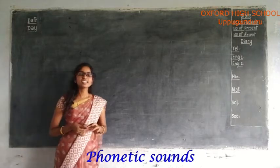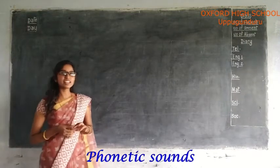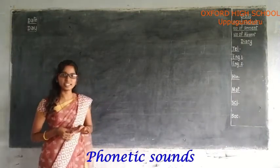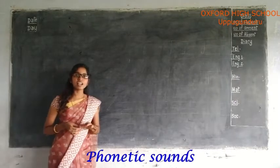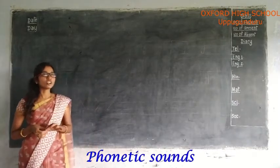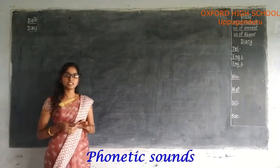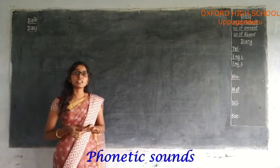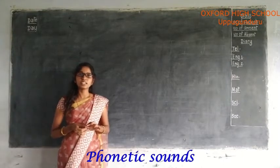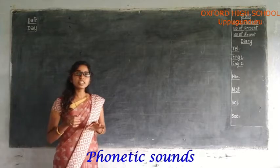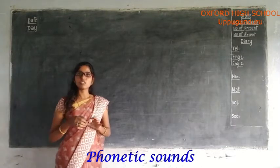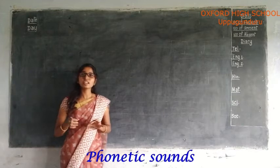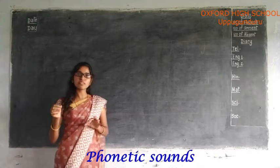Hello children. In previous class, we learned alphabets and how to write. In this class, we will learn how to pronounce the alphabets. Alphabets A to Z — these 26 letters have their own sounds, and each letter produces different types of sounds.